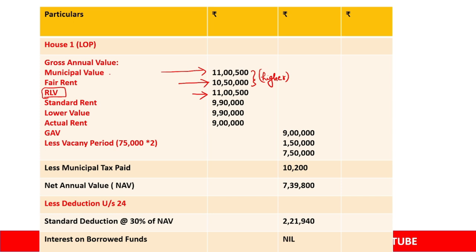After RLV, we write Standard Rent. Now from these two — RLV ₹11,90,000 and Standard Rent ₹9,90,000 — we take the lower value, which is ₹9,90,000. After writing that lower value, we write Actual Rent.